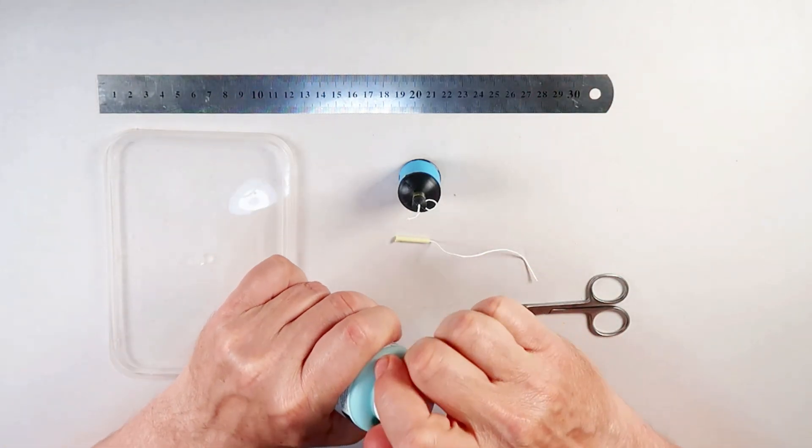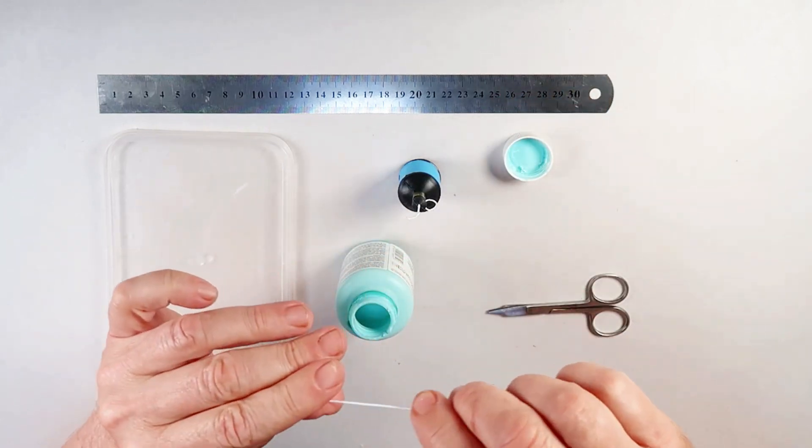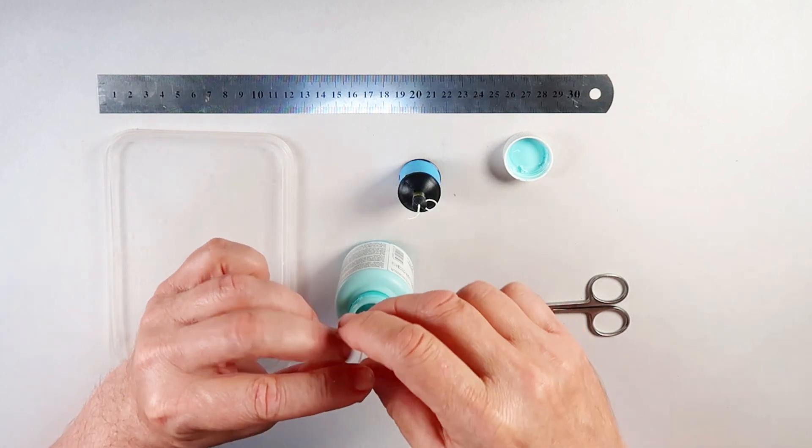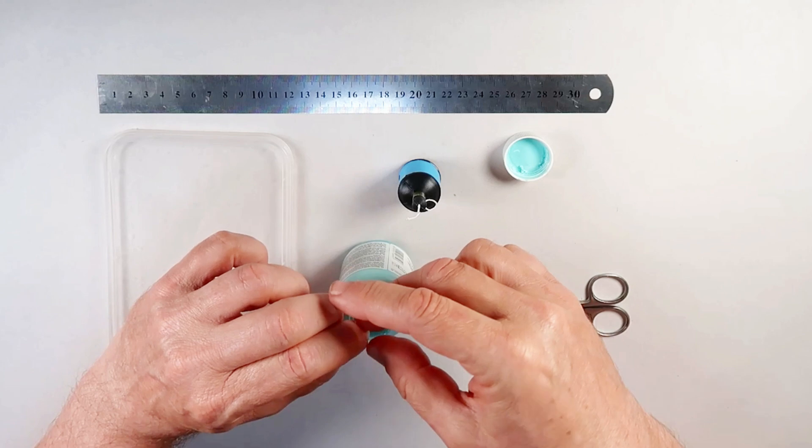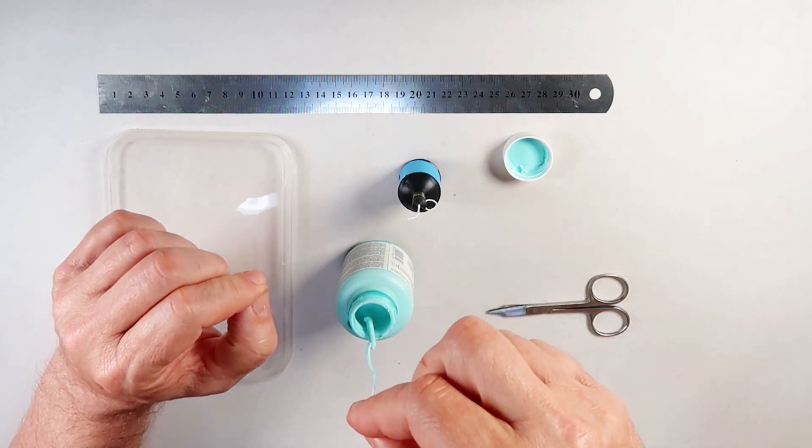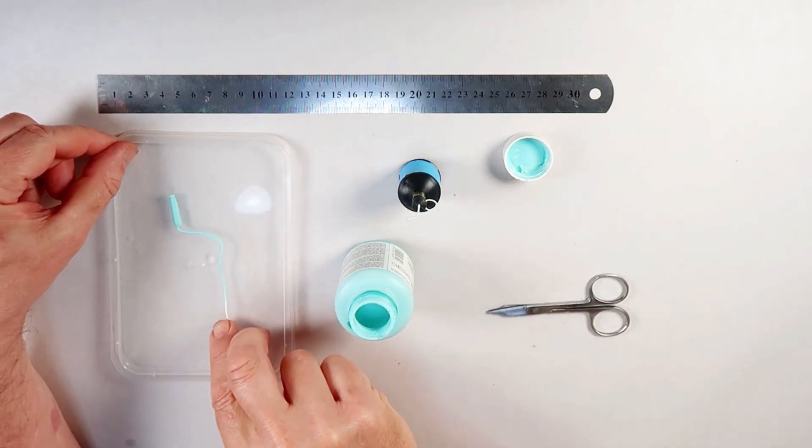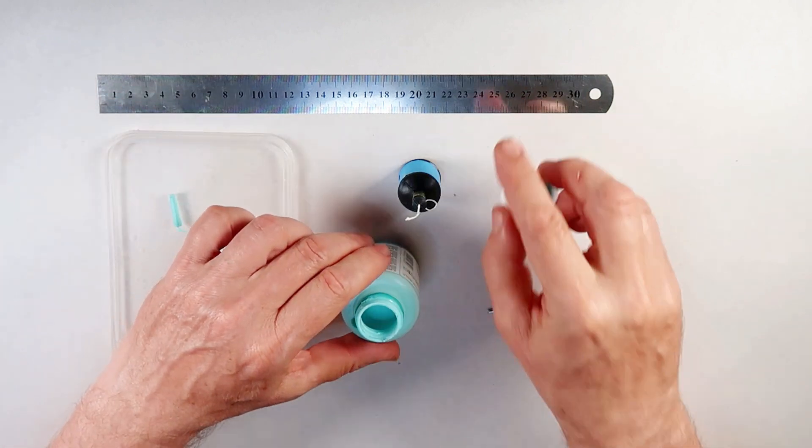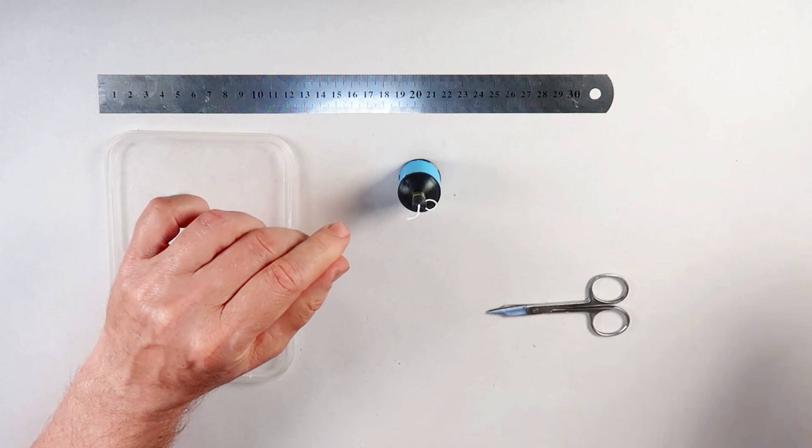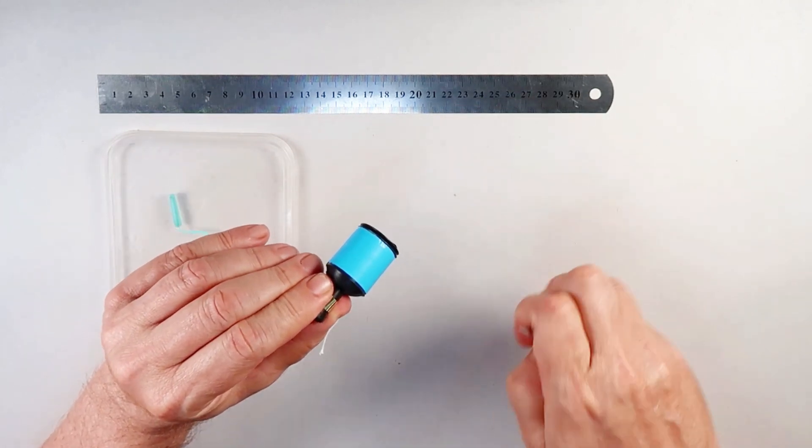Coating the charge in liquid latex gives it weather resistance and helps the string grip the lever. I'm using Artists Masking Latex. It is also available for use in tubeless bike tires. Once dry, it's ready to use. You can prepare as many as needed in advance.